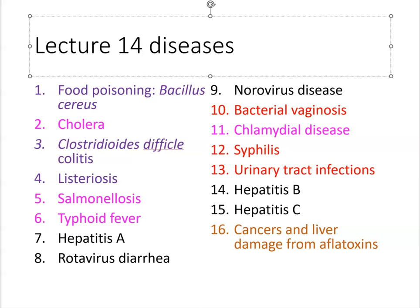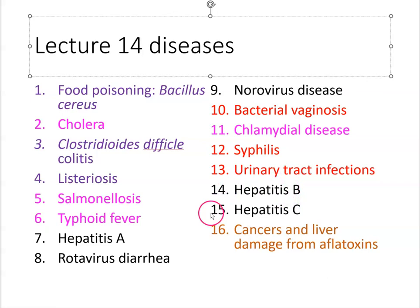I grouped these into categories. The first ones are gastrointestinal or diarrheal diseases. Then there are some that affect the urinary tract or genitourinary system. There are two that are kind of sexually transmitted, blood-borne — they don't really fit anywhere and just affect the liver. The very last one is a fungal disease that affects the liver primarily, so you just have to keep track of what we're talking about.